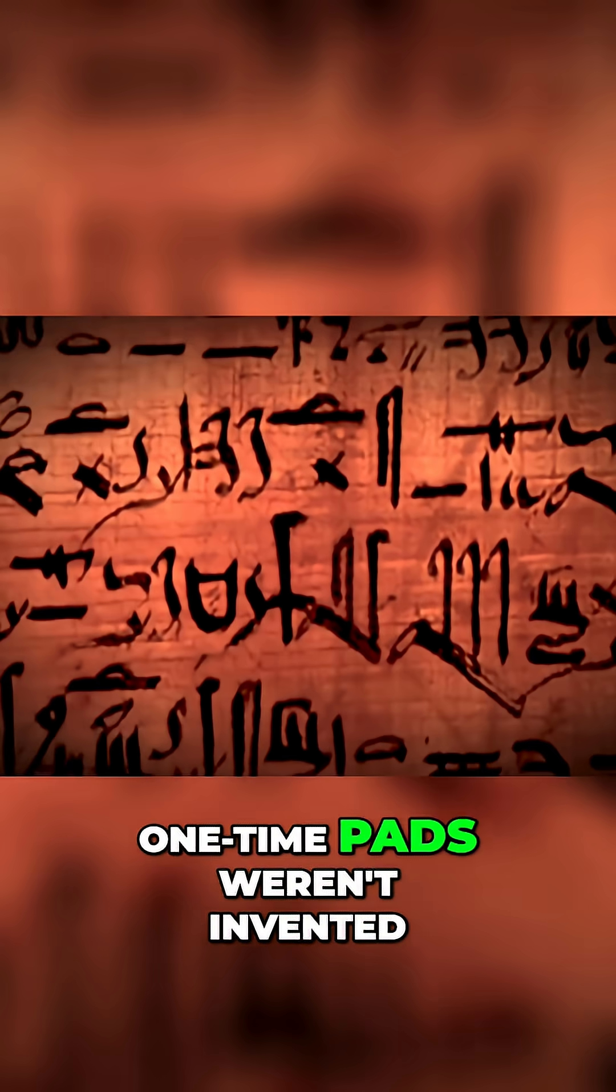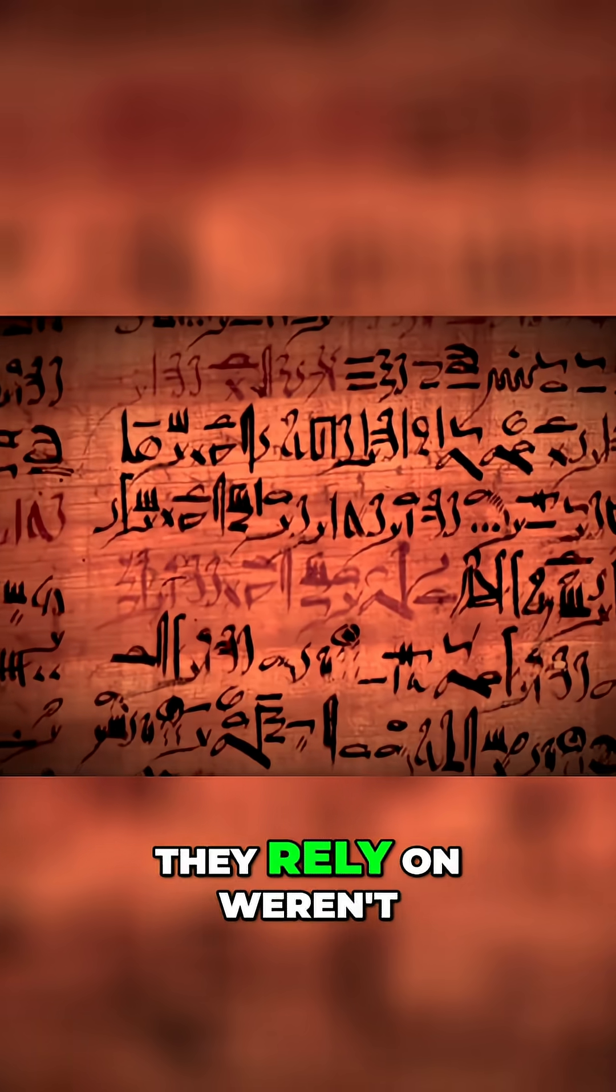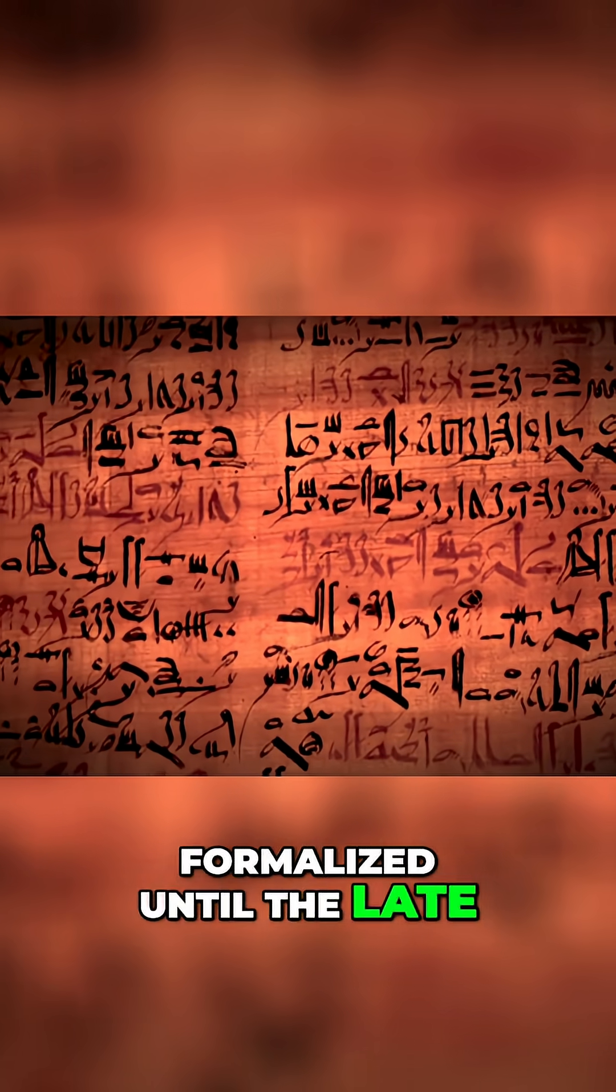The problem was, one-time pads weren't invented until the 20th century, and the mathematical principles they rely on weren't formalized until the late 19th century. Yet the book of Soiga appears to implement a similar system four centuries earlier.